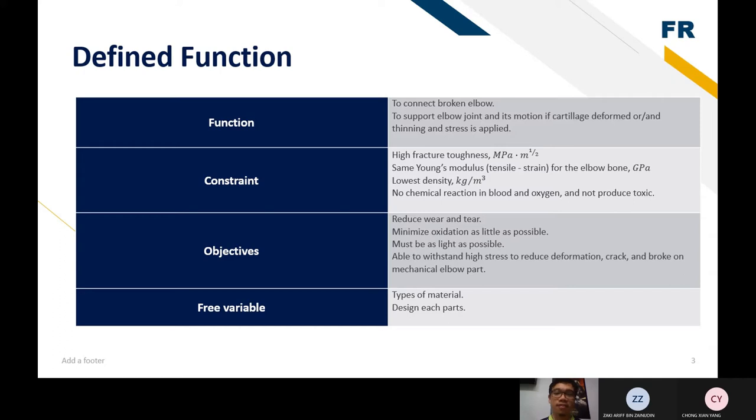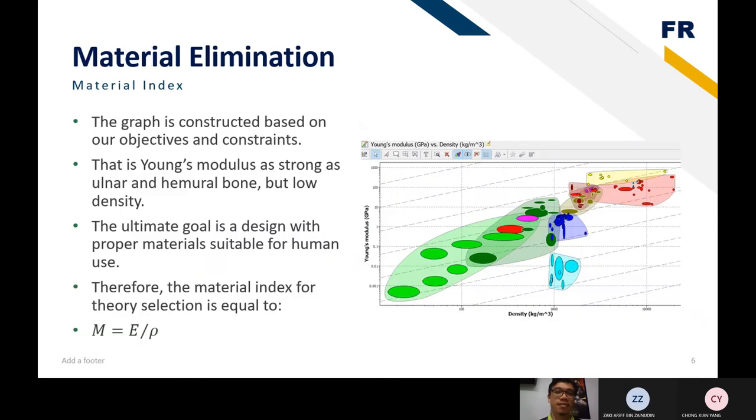So to fulfill the objectives, there are two types of material and its design. So here, you can see the graph. The graph is constructed based on our objectives and constraints, that is high Young's modulus, as strong as ulnar and humeral bone, but low density. The ultimate goal is a design with proper material suitable for human use. Therefore, the material index for this graph is to be M equal to E over rho or then C.